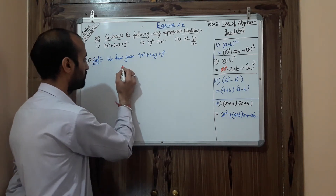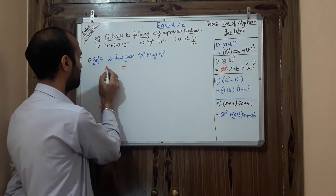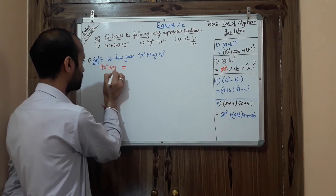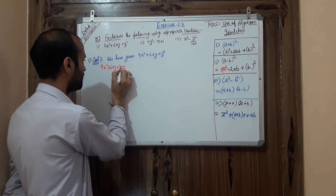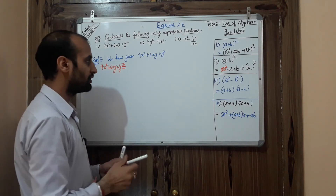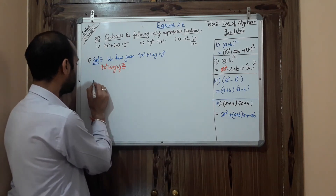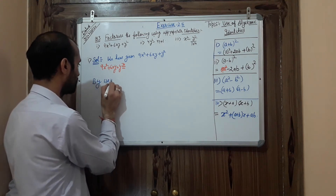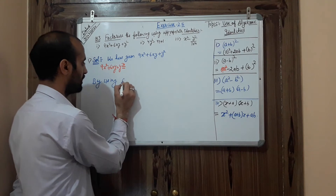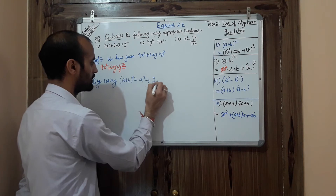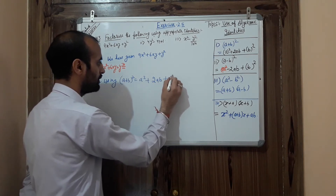The question is 9x² + 6xy + y². You can directly write it using (a + b)² = a² + 2ab + b². My first task is to find the value of a and the value of b. Now, 9 can be written as 3 × 3, which means 3 is squared.